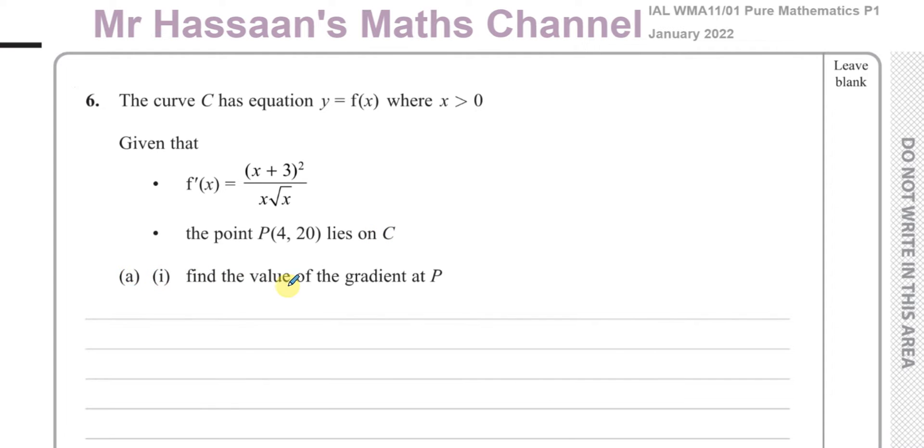We've got to first find the value of the gradient at P, the gradient of the curve at point P. Now, what they've given us here is not the equation of the curve, but the equation of the gradient function of the curve.